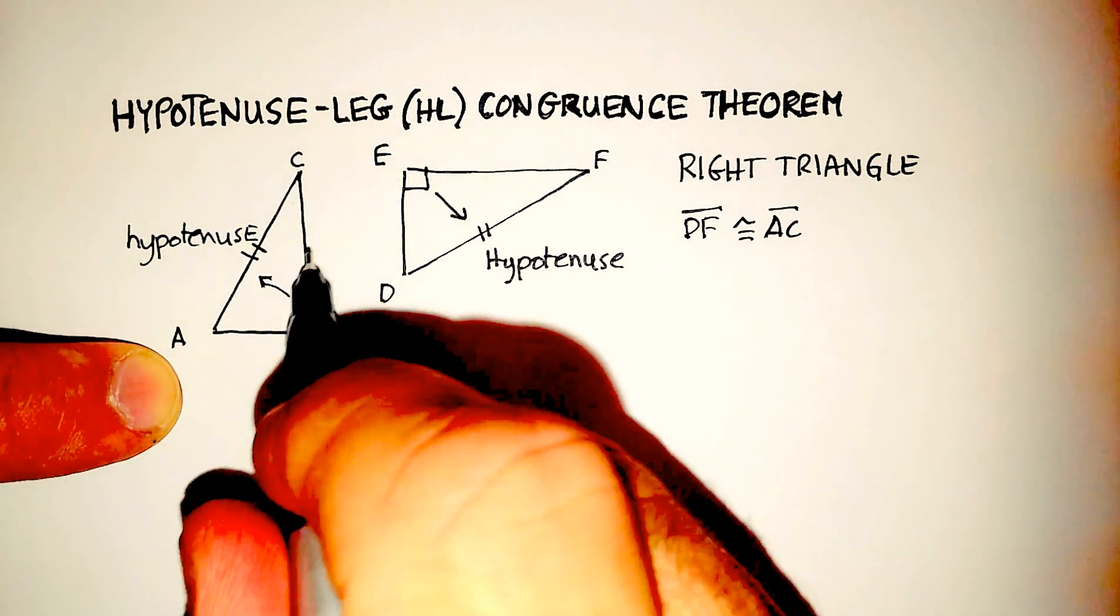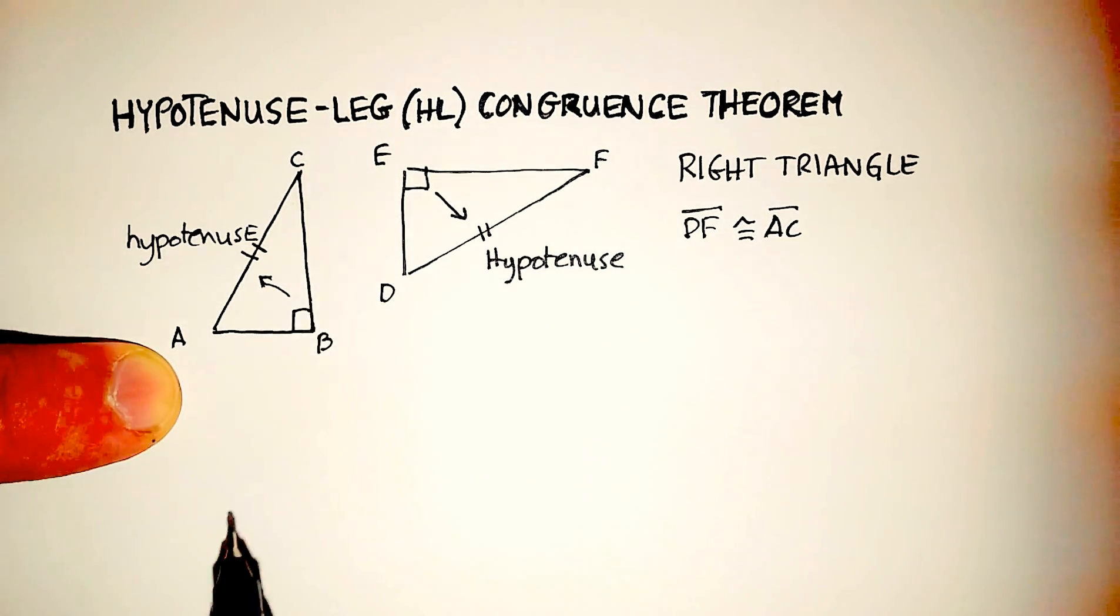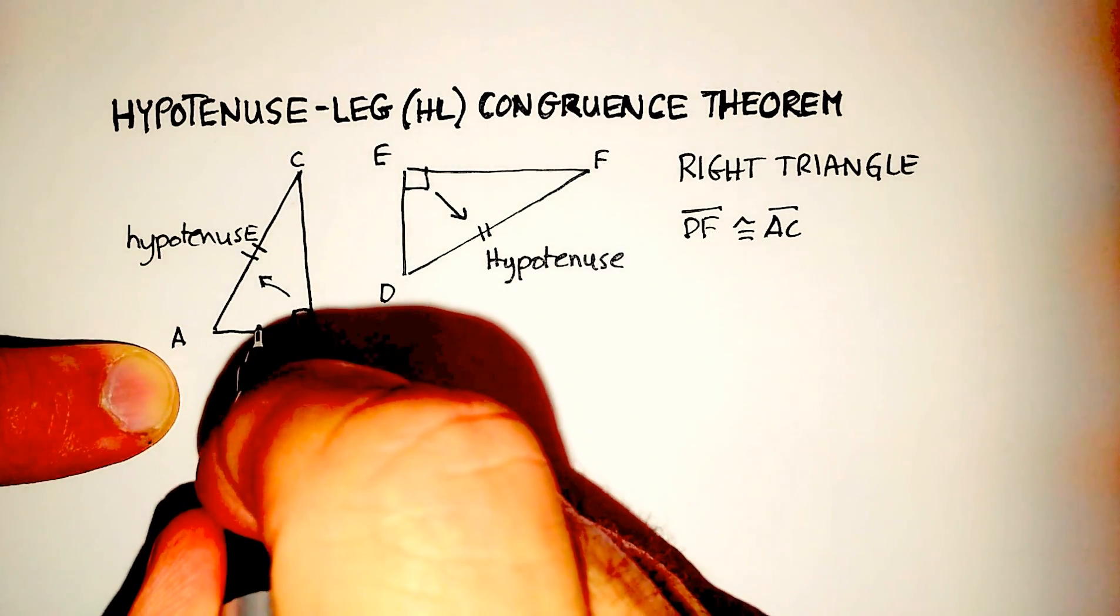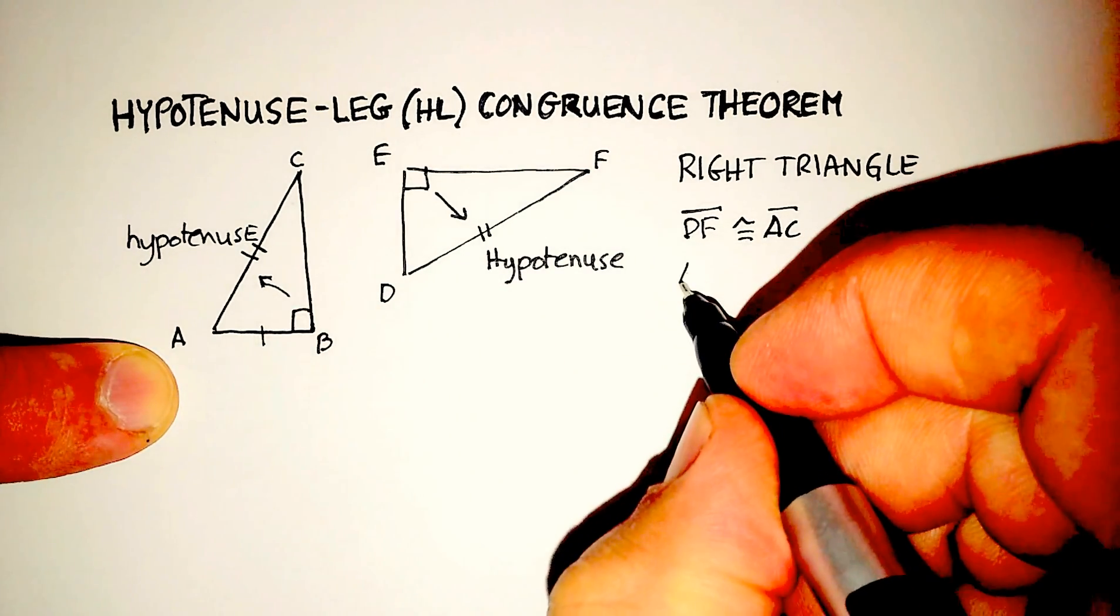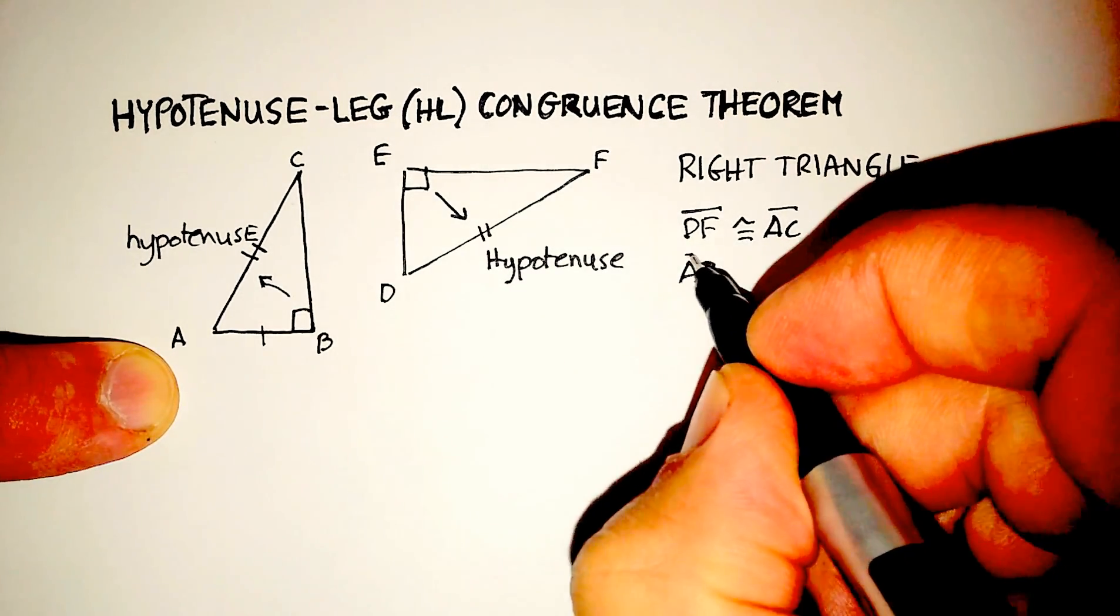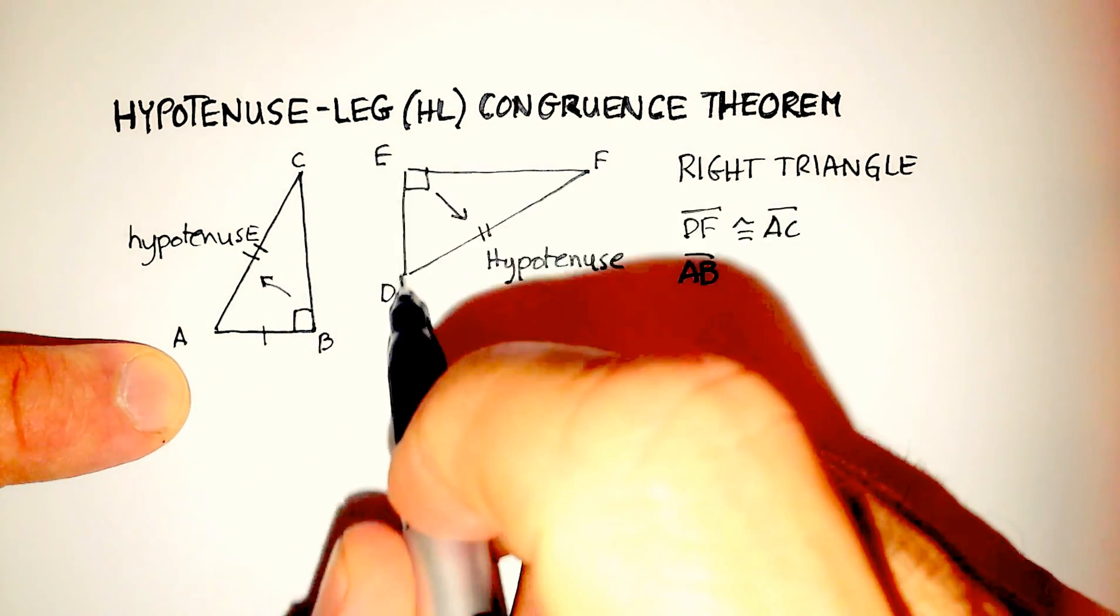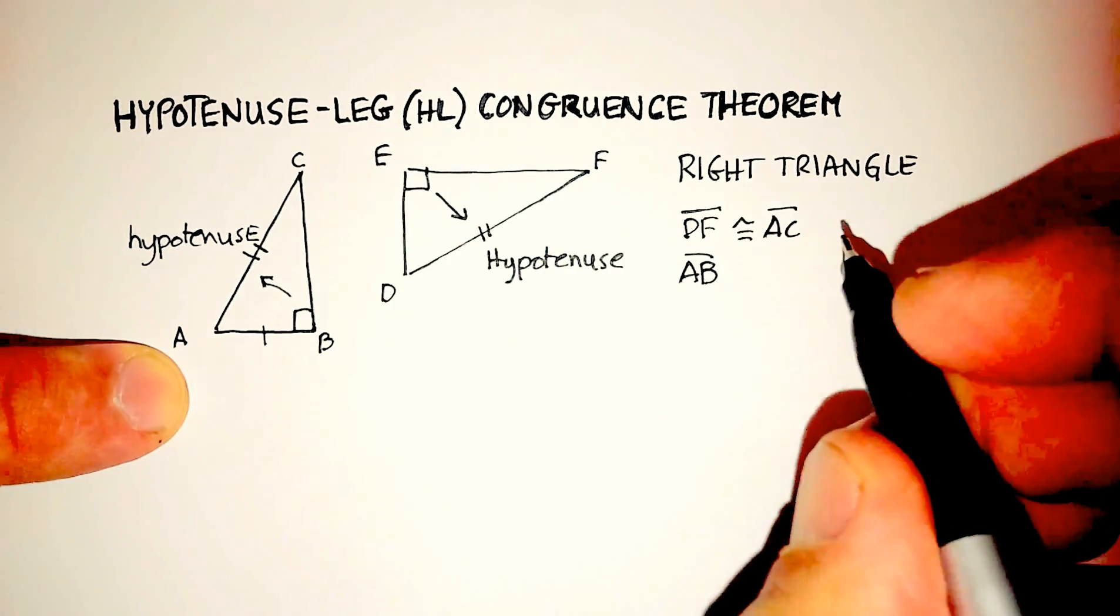And one other leg in a right triangle. So let's say line segment AB would have to be congruent with line segment DE.